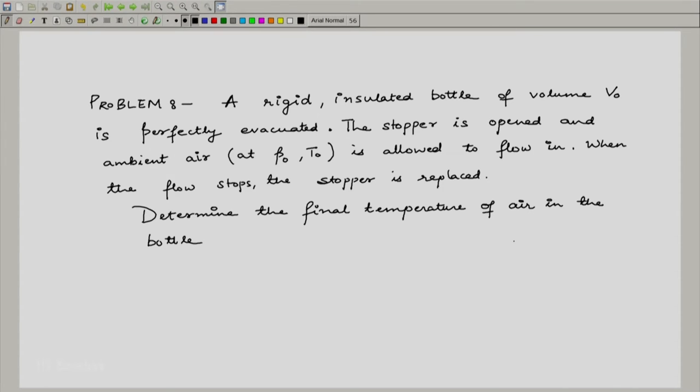Let me read out the question at hand. A rigid insulated bottle of volume V0 is perfectly evacuated. The stopper is opened and ambient air at conditions P0 and T0 is allowed to flow in. When the flow stops, the stopper is replaced. Determine the final temperature of air in the bottle.